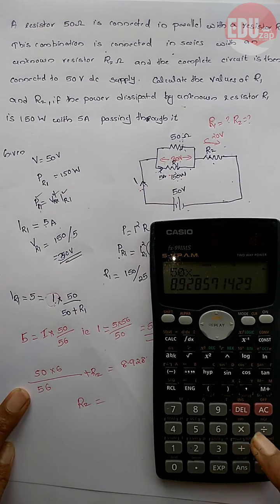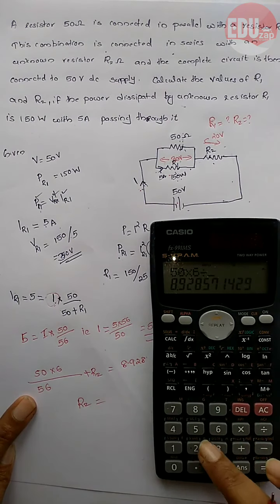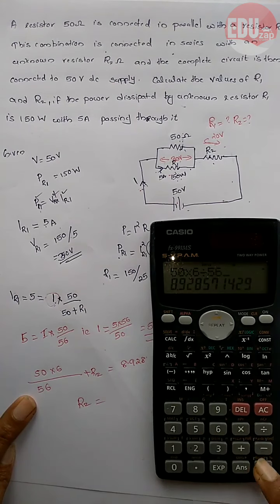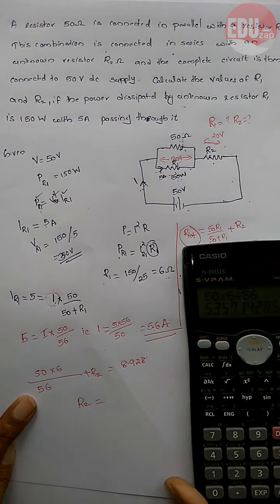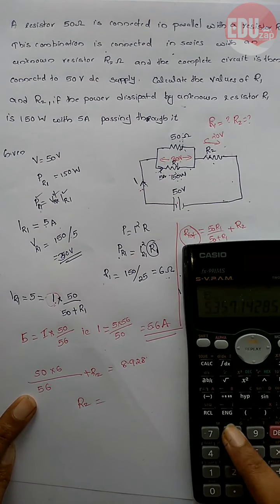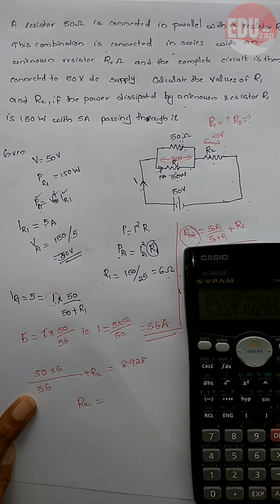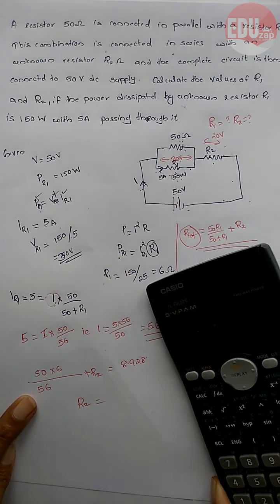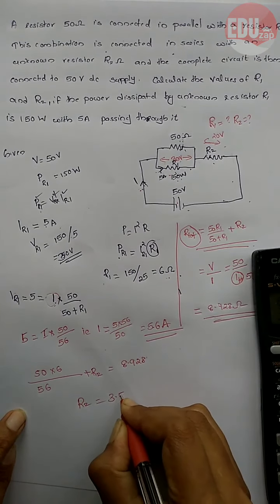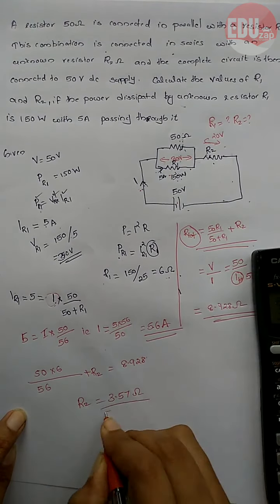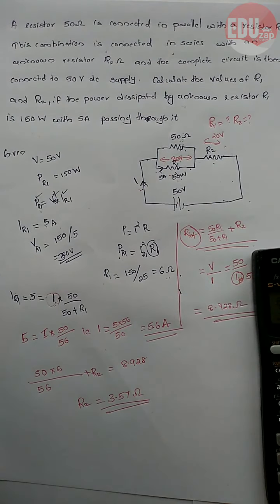So the parallel resistance is 50 into 6 divided by 56, and R2 comes out to approximately 3.57 ohm.